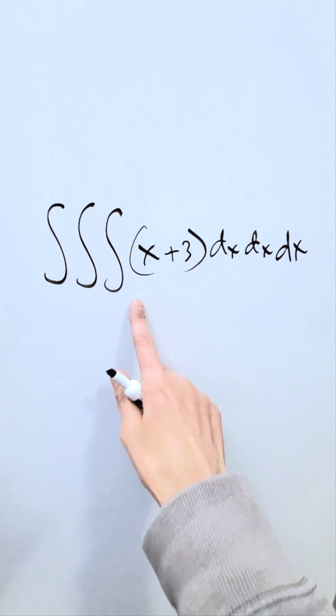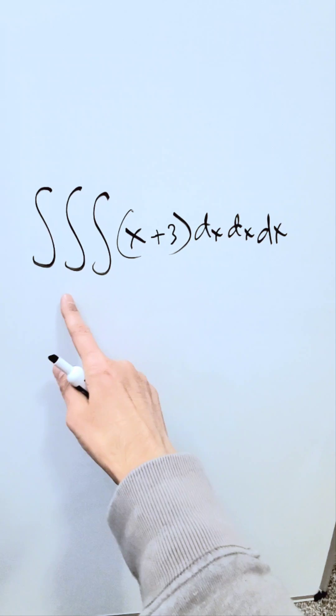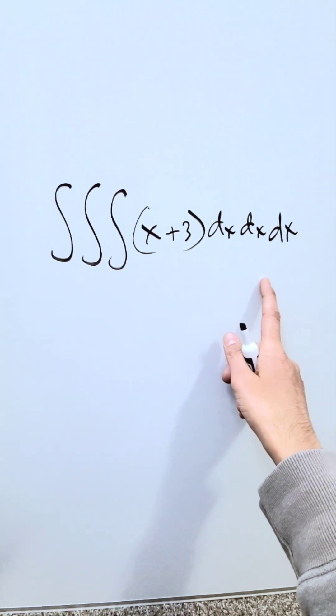Look over here at this integral, indefinite integral. You have x plus 3 nested in a dx integral, which is nested again in another dx integral. How do we compute this?